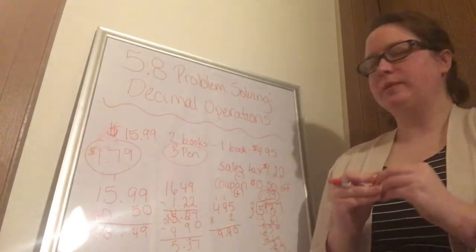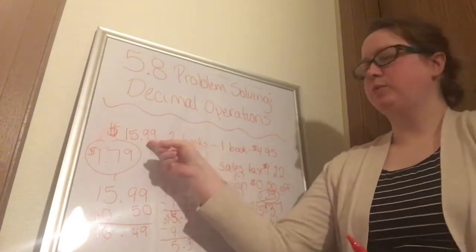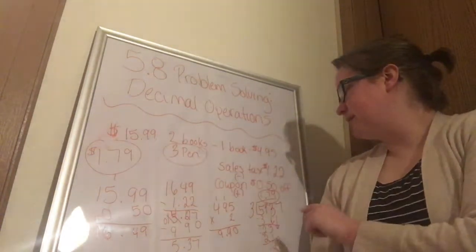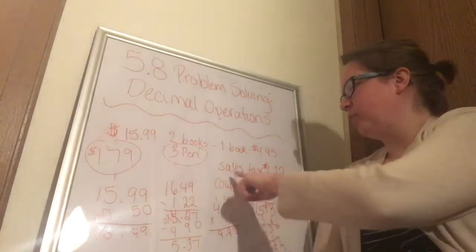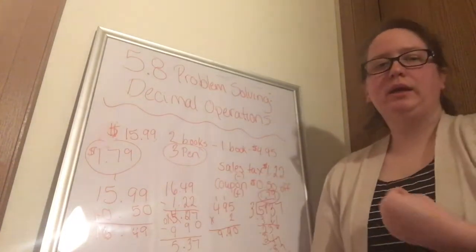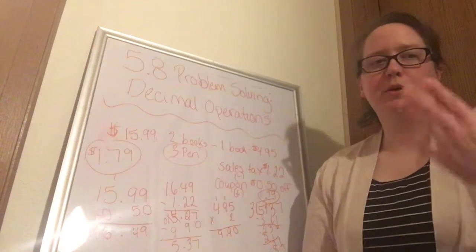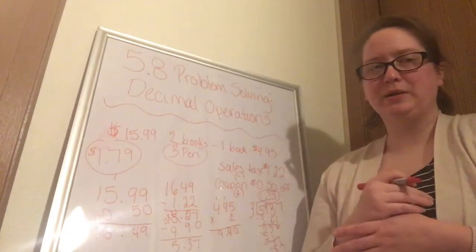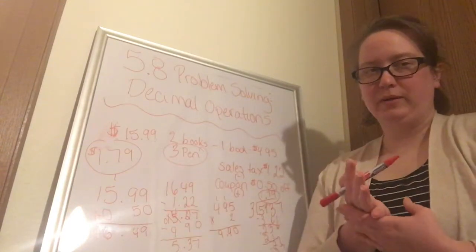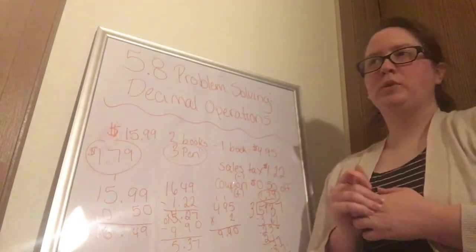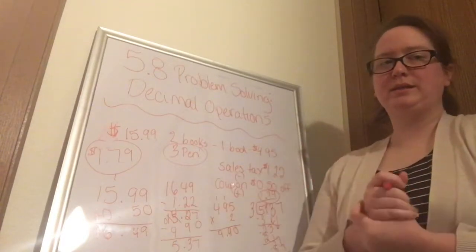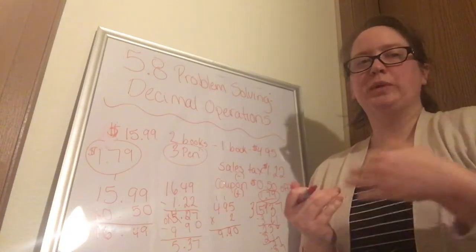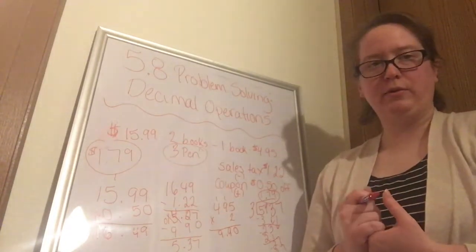So really we're working backwards with these problems, because we're given the total price and bits and parts. The important thing to remember is that when we have a coupon — normally you would add up your total and take off the coupon — but because we're working backwards, we add the coupon back on. Then we subtract everything else. Sales tax is added at the end of a purchase, so working backwards, we subtract it.